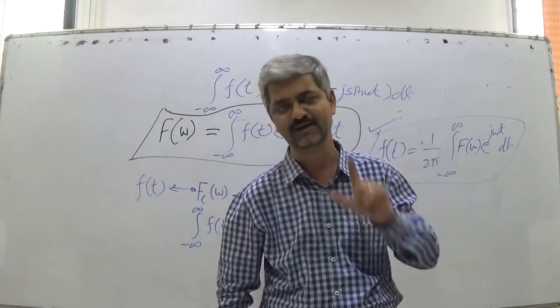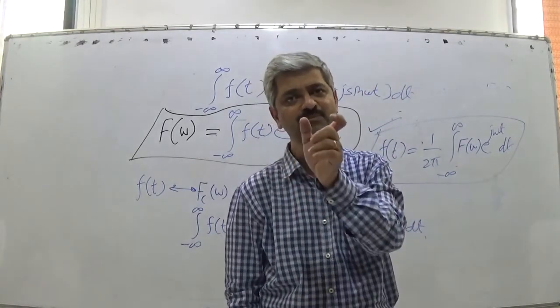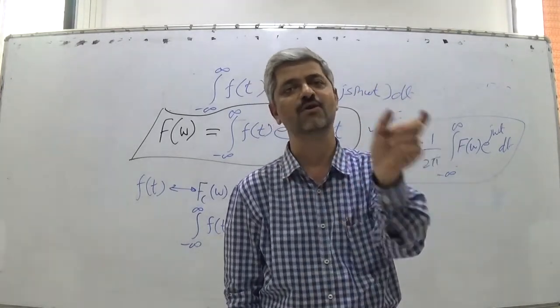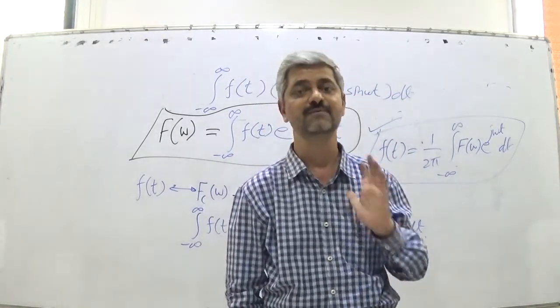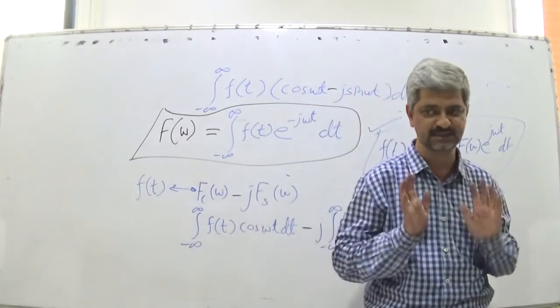Cosine transform and sine transform, where we just use minus. So that is what we get as a Fourier transform. I think for today it is enough. Thank you.